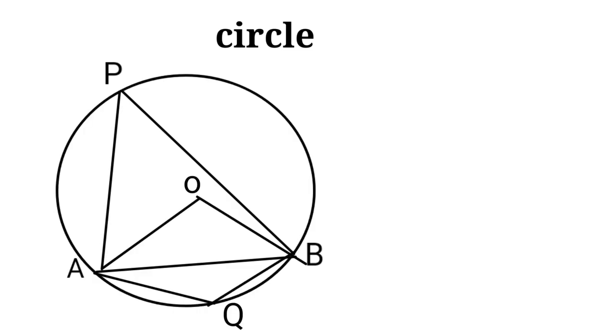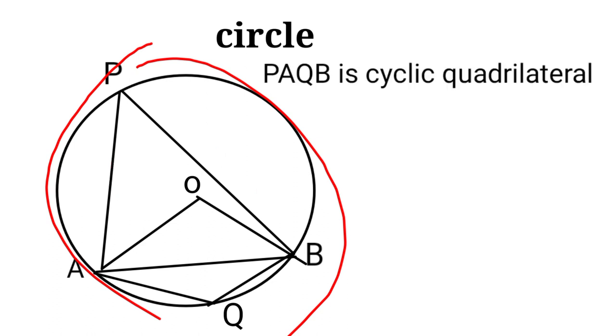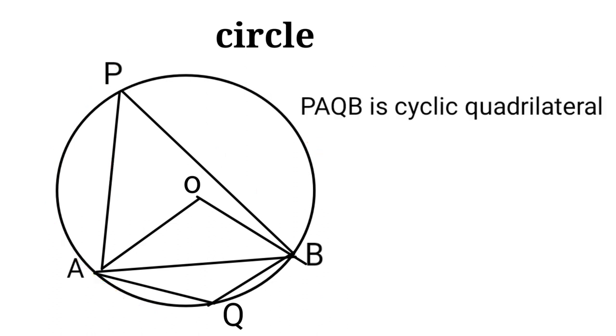Let us take two points P and Q in the major or minor segments and join them with A and B. We get a quadrilateral PAQB. We measure angles P and Q. We can say if angle P plus angle Q equals 180 degrees, then PAQB is cyclic. Now if we produce QB to R, then angle PBR equals angle APB, meaning the exterior angle of a cyclic quadrilateral is always equal to the interior opposite angle.